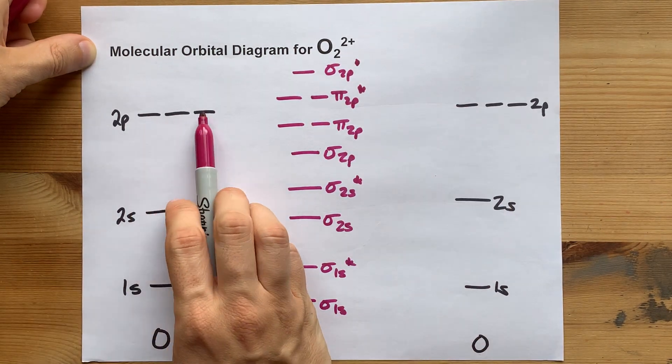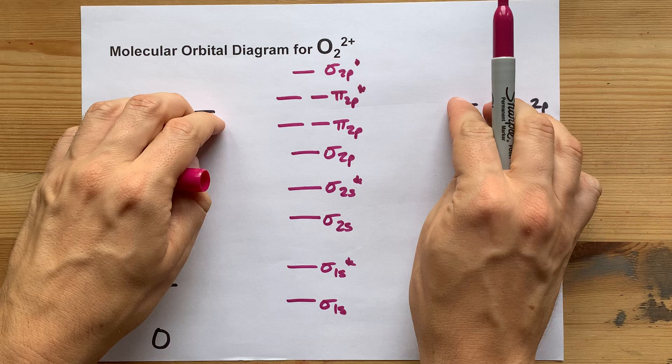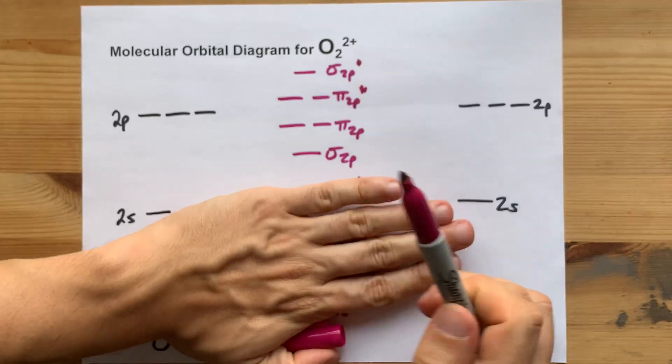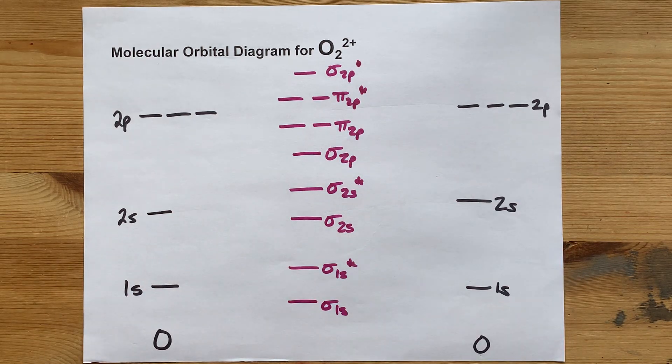Note that 6 atomic orbitals will overlap to give 6 molecular orbitals when they overlap.